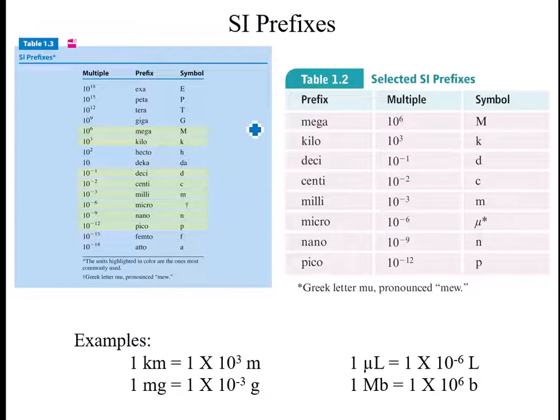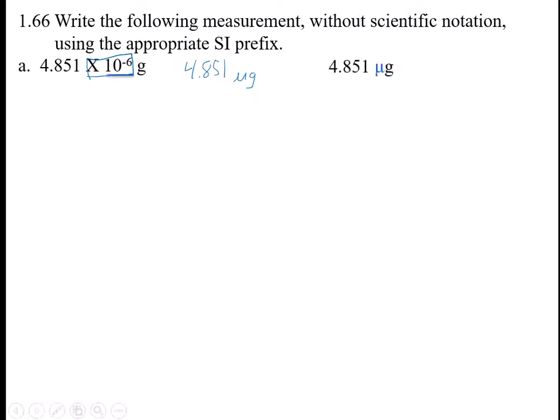I should have said back on the slide, I do expect you to know these. We will use them both this semester and in 1212. Already have the answers here, sorry. It's 4.851. When I write the micro symbol, it's basically a u with a leg on the front and back. That's the way I write it.